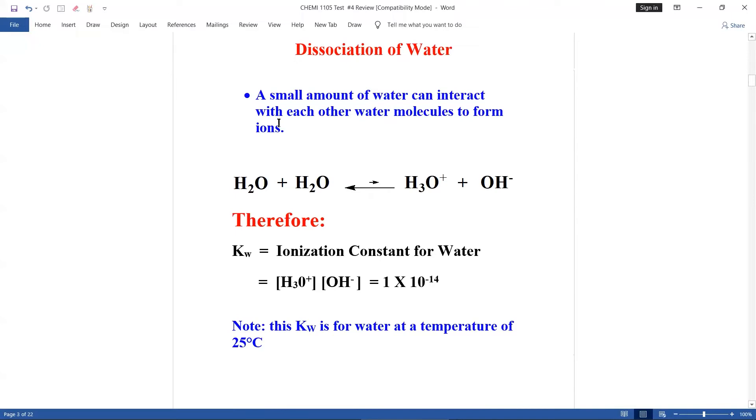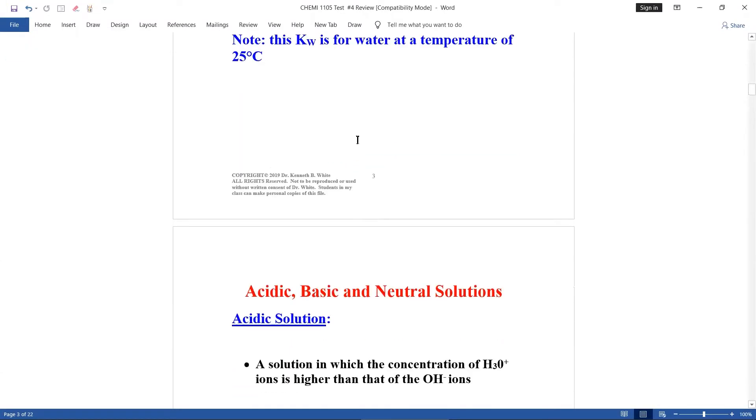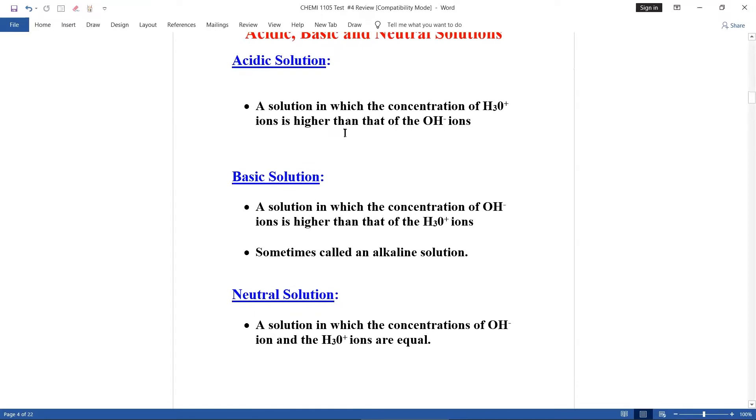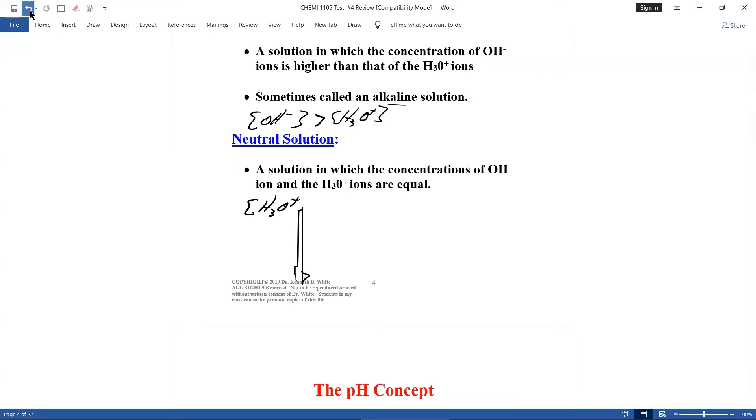Now, dissociation of water. Because of that, you should know this. H3O+ concentration, hydronium times hydroxide equals 1.0 times 10 to the minus 14. Next, you should know, acidic solution. The hydronium ion concentration is greater than the hydroxide ion concentration. For basic solution, the hydroxide is greater than the hydronium. And sometimes called alkaline. And for neutral, they're equal. The concentration of hydronium is equal to the concentration of hydroxide.